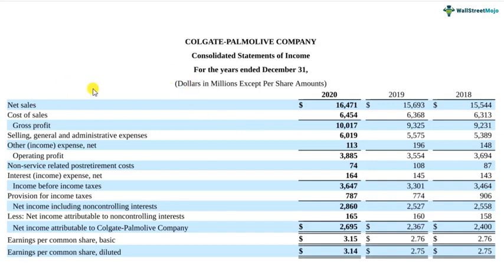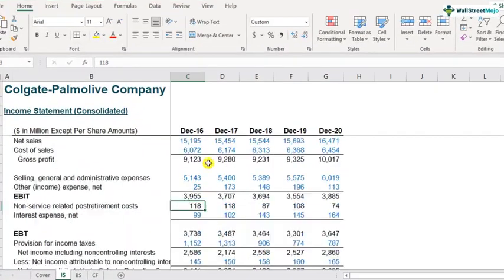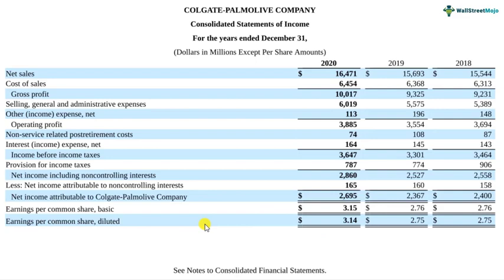So ratio analysis is nothing but mathematical calculation of some ratios from the financial statements, which helps in understanding the company — how it has been doing and how it might perform in the near future. To be more precise, it's a mathematical approach to calculate various financial ratios from not only the income statement but also balance sheets and cash flows, and these ratios are used to analyze the company's financials and gain insights about its operations.